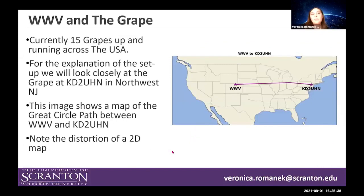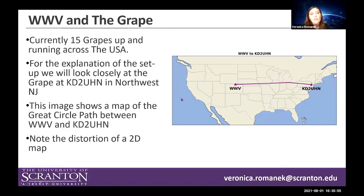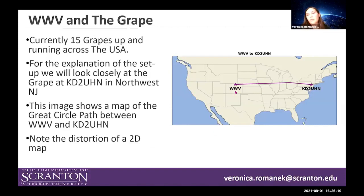There are currently 15 GRAPEs set up and running across the United States. We're going to look closely at one located at my house, call sign KD2UHN, which is in northwestern New Jersey. This image on the right shows a map of the great circle path between WWV and KD2UHN. Due to the distortions of a two-dimensional map, the line appears a little crooked, but this is WWV near Fort Collins, Colorado, and this is my house in northwestern New Jersey.